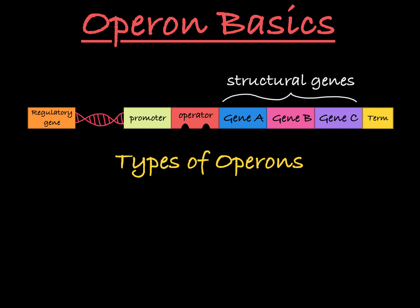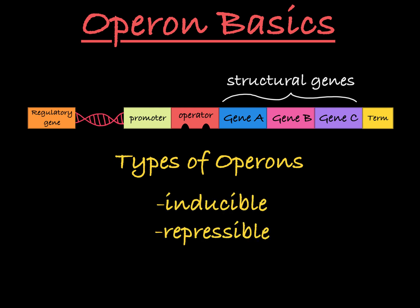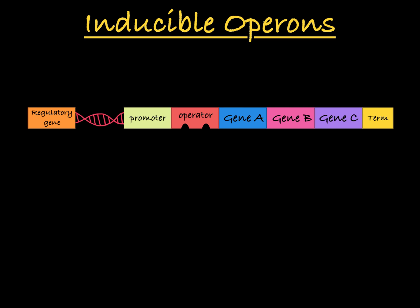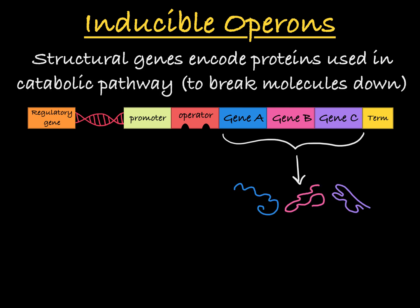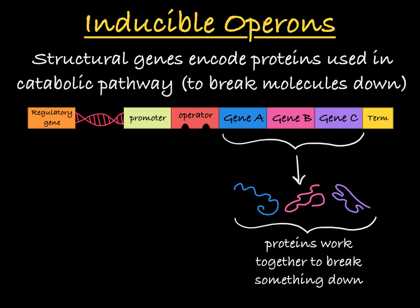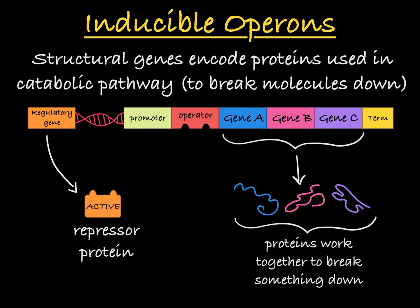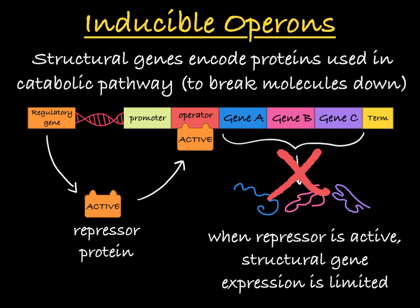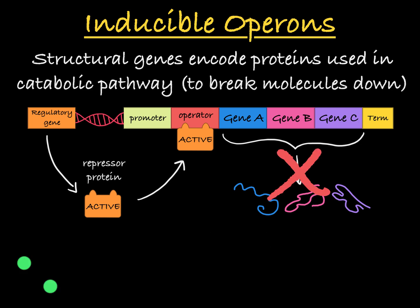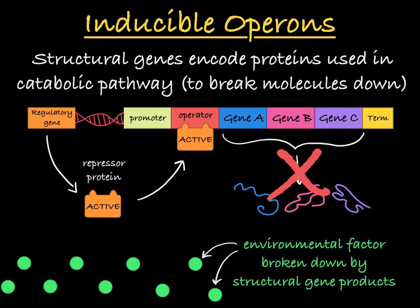There are two types of operons: inducible operons and repressible operons. Inducible operons often contain genes that encode proteins involved in a catabolic pathway, a series of steps that breaks down a molecule in the environment. In an inducible operon, the regulatory gene generally encodes an active repressor that is created in a form that allows it to bind to the operator and prevent transcription of the structural genes. That all changes when an environmental factor comes into play — generally, this environmental factor is the molecule, or a derivative of the molecule, that is broken down by the protein products of these structural genes.